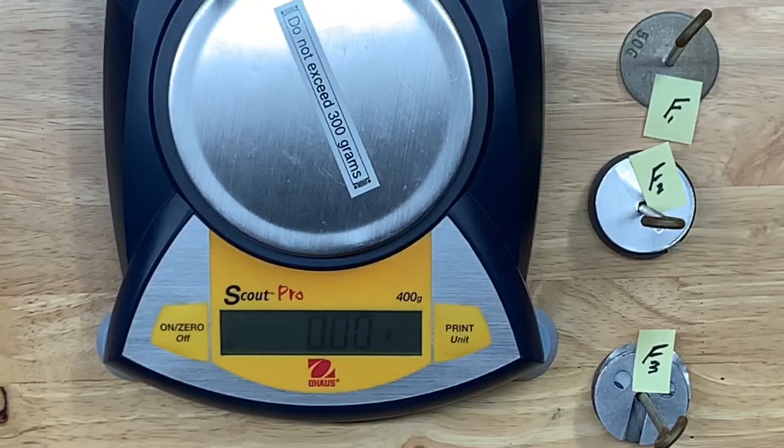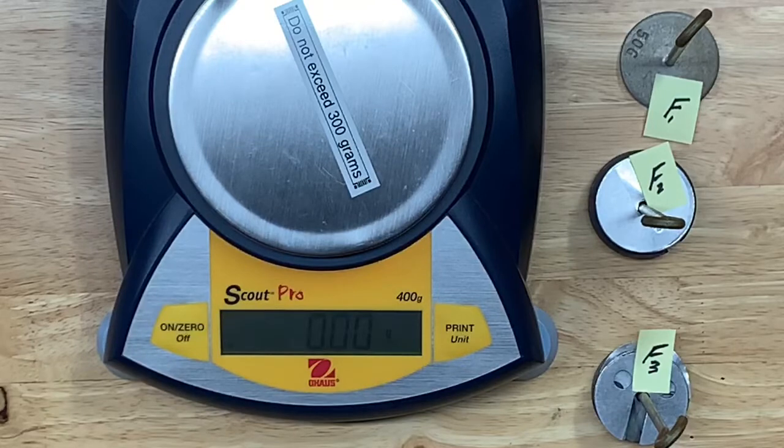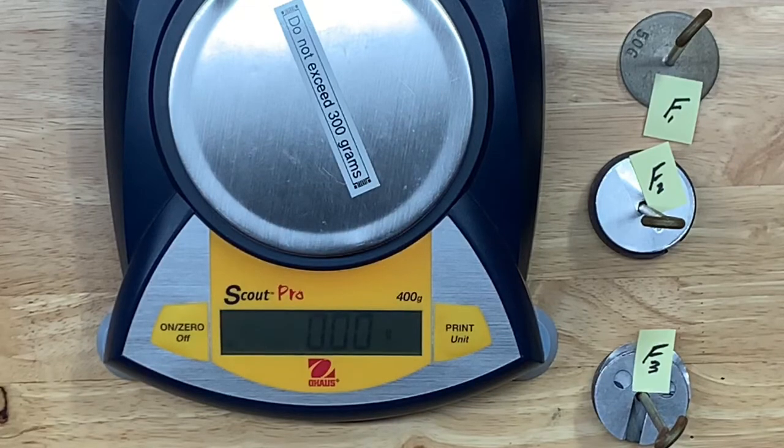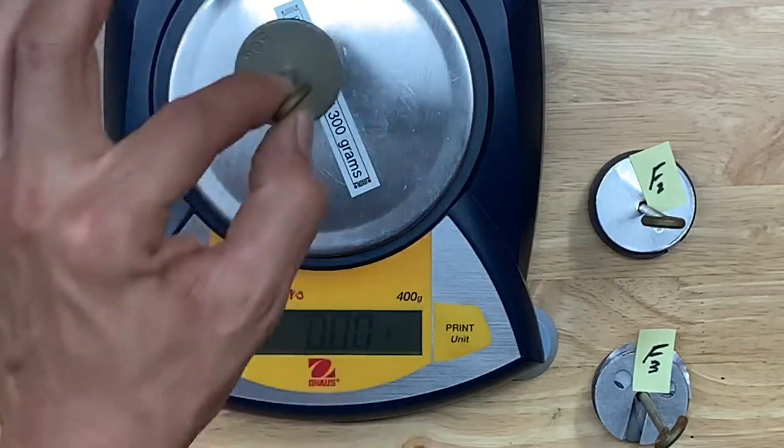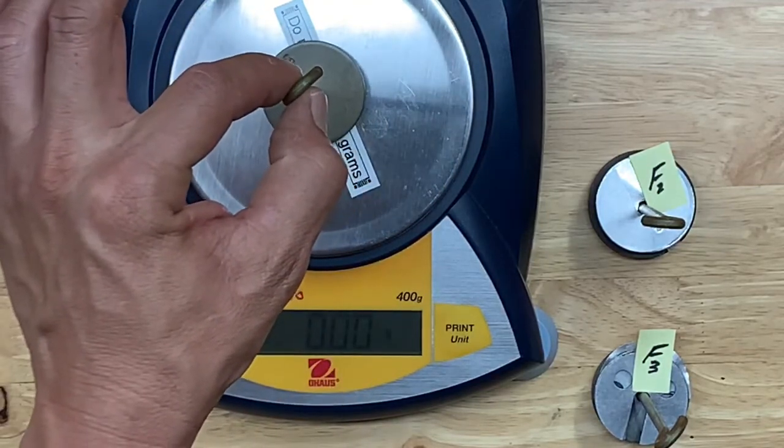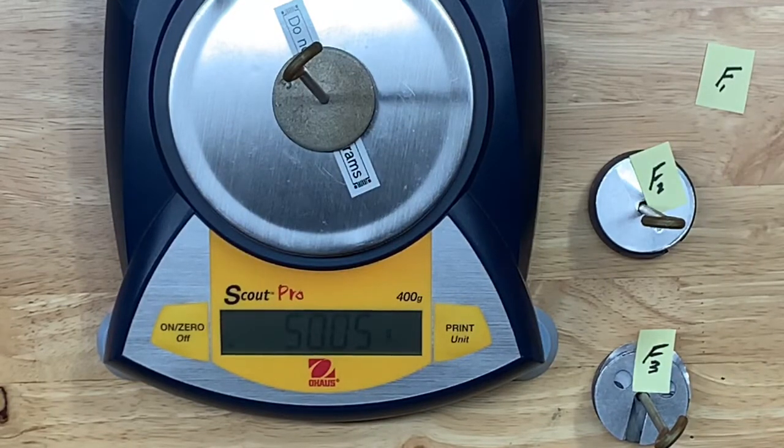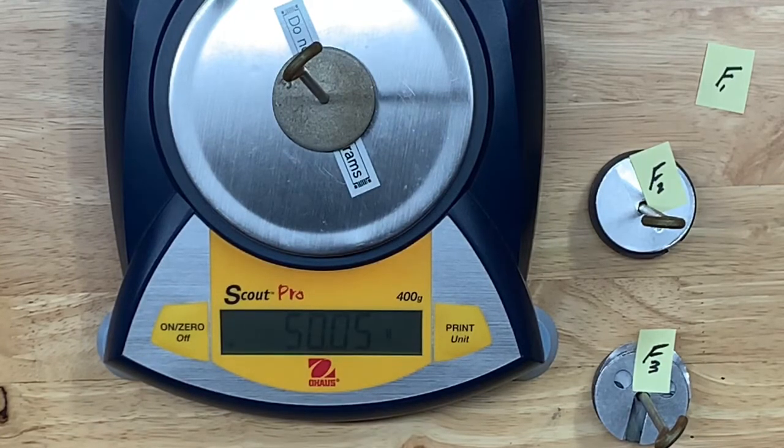So usually what I see students doing is just simply counting the weights that are stacked on those hooks and adding up the numerical values imprinted on the weights. We'll do something a little more accurate—we'll just go ahead and weigh them. Actually, this hook is probably going to be dead on. And I'm taking off these little labels because those will register on the scale, not by much, but they would. So this is f1, and I don't know how well you can see the display here, but it is 50.05 grams.